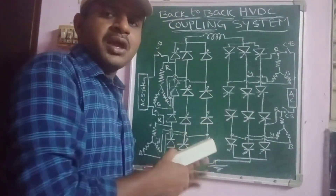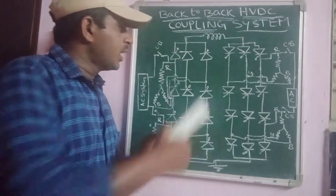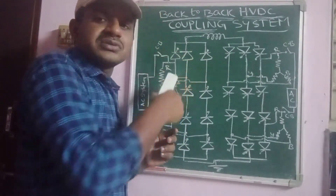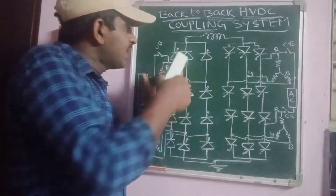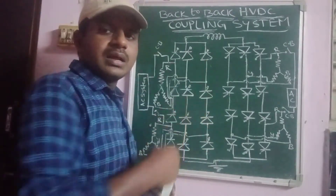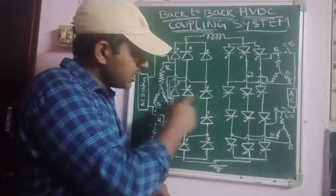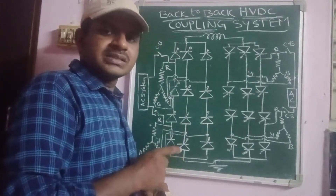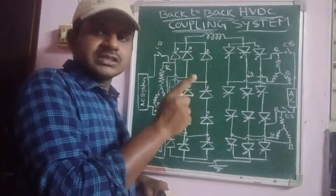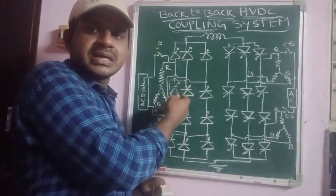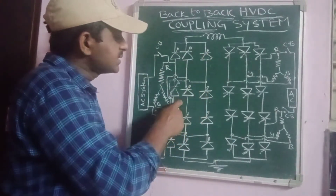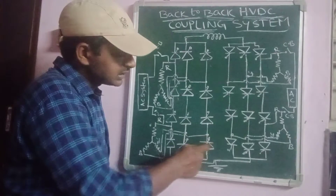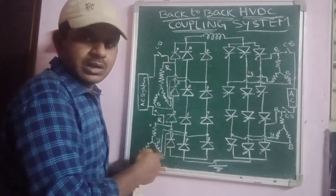Looking at this diagram, this is the rectifier station. As discussed in the previous session, according to the connection of thyristor valves, we can identify it as a rectifier station. The total converter station may contain 12 thyristors, and these 12 thyristors generate 12 pulses — each thyristor generates one pulse. Six thyristors are connected to one three-phase transformer, and another six thyristors are connected to another three-phase transformer.